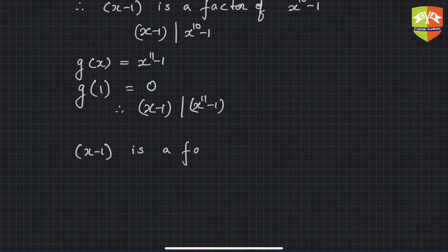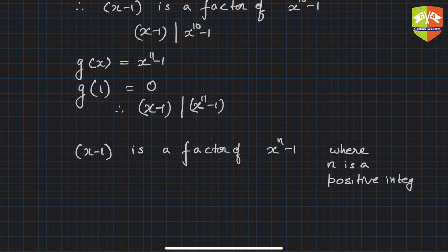So (x - 1) is a factor of (x^n - 1), where n is a positive integer. Whenever n is a positive integer, that is a natural number 1, 2, 3, 4, 5, 6, whatever, then (x - 1) will always be a factor of this.